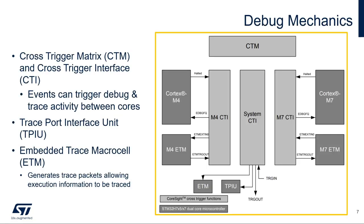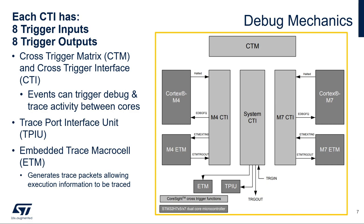One of the cool features of ARM cores is the cross-trigger matrix and interface. These two systems allow events from various sources to trigger debug and trace activity. This is what allows you to set a breakpoint in one core that stops the other processor. There are three components to the cross-trigger interface, one at system level and one for each core, connected by the cross-trigger matrix. The system level and the CM4 interfaces are accessible to the debugger via system access port and APB debug bus, while the CM7 interface is physically integrated into the core and accessible via its access port and the AHB debug bus. Each CTI has up to eight trigger inputs and eight trigger outputs, and any input can be connected to any output on the same or different interface via the CTM.